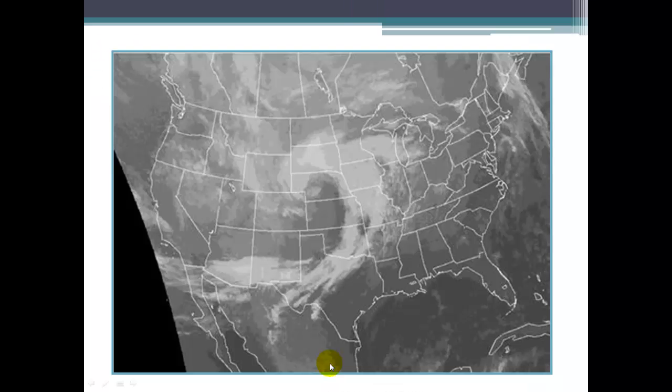Here's a satellite image of a typical mid-latitude cyclone in the United States, recognizable by its comma-shaped cloud. So you can see the cold front would be here, the warm front would be here, and the low pressure system is right in this area here.